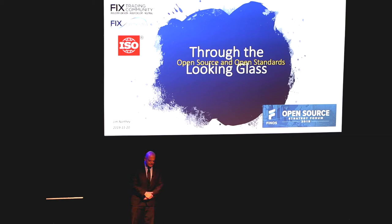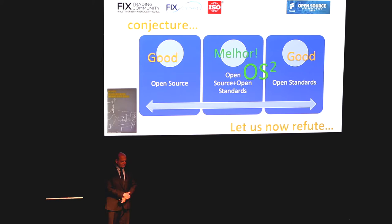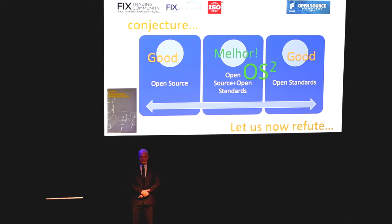What I want to talk today about is open source and open standards, and sort of take a through-the-looking-glass approach. My conjecture, going back from my readings from undergraduate school — Carl Popper, conjectures and refutations — is that open standards are good, open source is good, but when you're able to combine open source and open standards, I think you really have something.